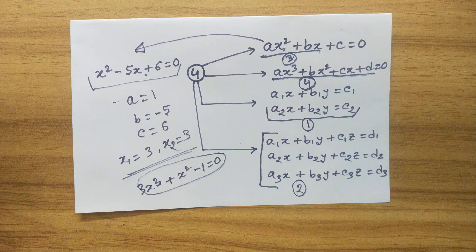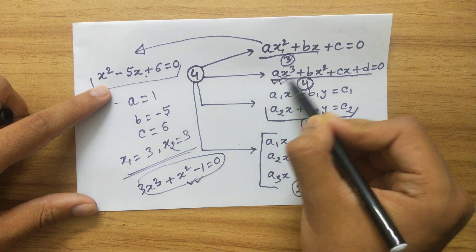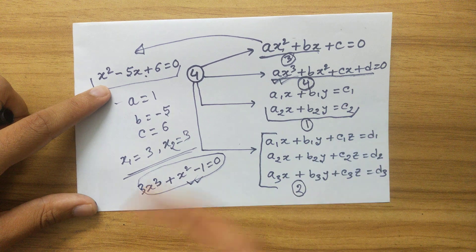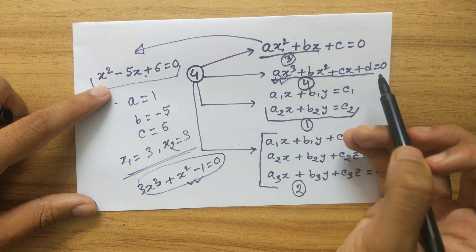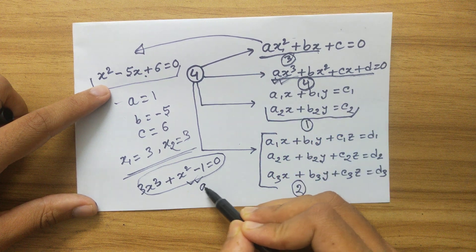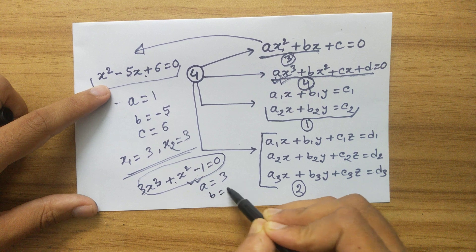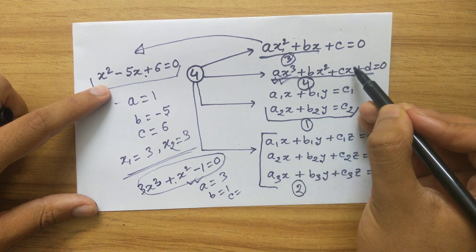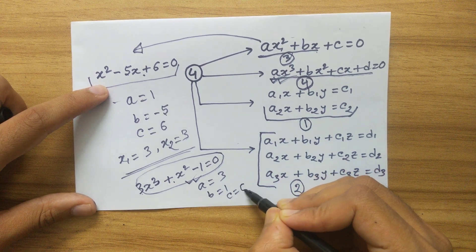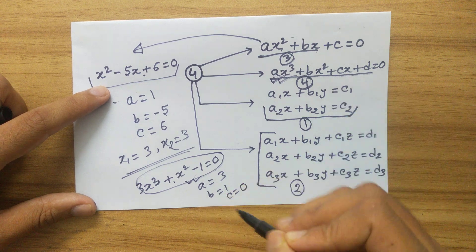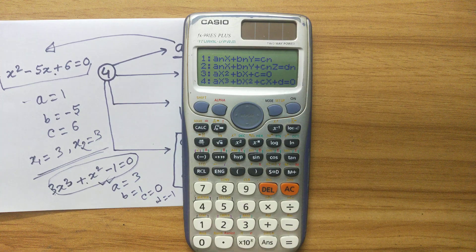Now let's move to an example of the cubic type — AX cubed plus BX squared plus CX plus D equals 0. We need to find the values of A, B, C, and D. Here A equals 3, B equals 1. There is no X term so C equals 0, and D equals minus 1.